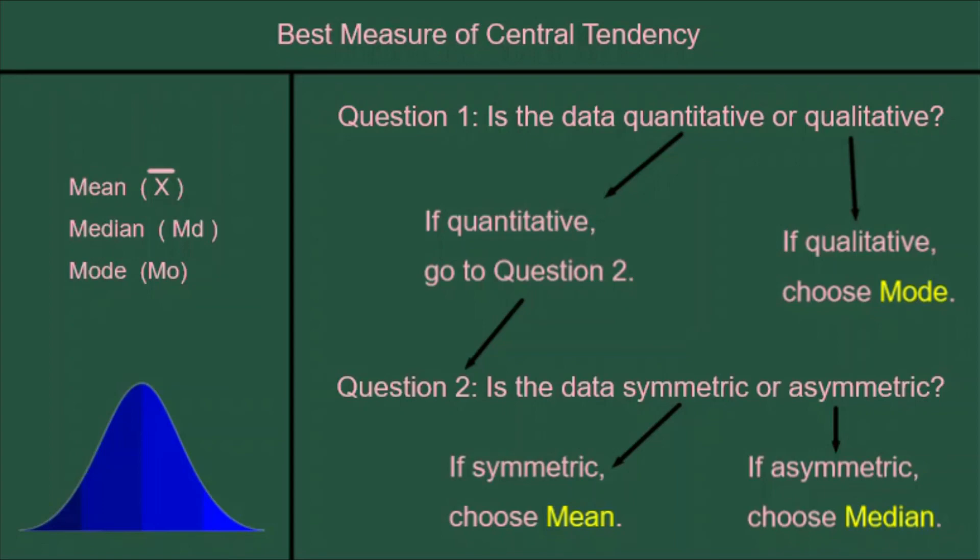If we choose median, we can justify by saying the data is quantitative and asymmetric. So you can see how just giving the answer to the two questions that you had to ask when you made your choice justifies the choice.